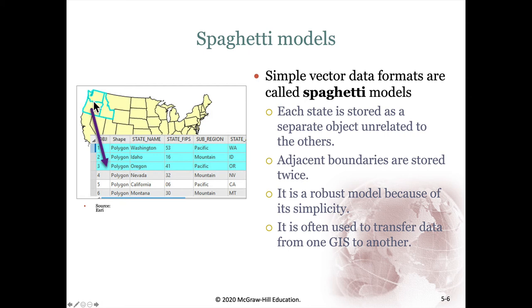Oregon would store that line in a spaghetti model and Washington would store an identical line, so even though they're adjacent, the boundary is actually stored twice. It's good for its simplicity, but it does not allow us to do all the sorts of analyses that we might want to do with GIS.